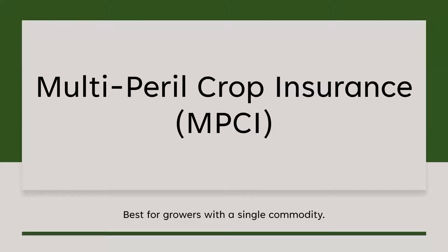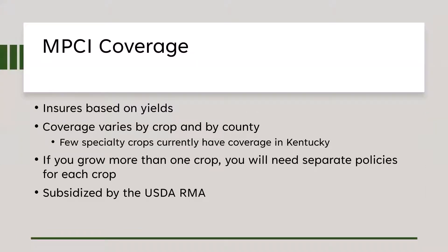First, a quick refresher on crop insurance programs and policies. First up is multi-peril crop insurance, or MPCI. This is a single-commodity policy — one policy covers one crop — so if you have multiple crops, you would need separate policies. It's geared toward large acreage in one or two crops. Coverage varies by crop and by county, and you need a large number of acres in that specific crop to have a policy in that county.